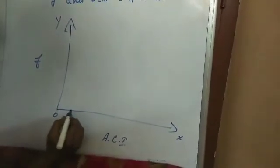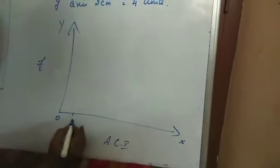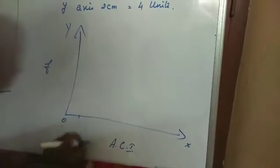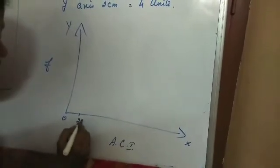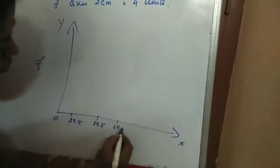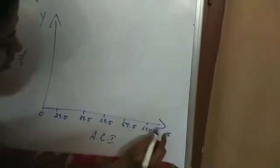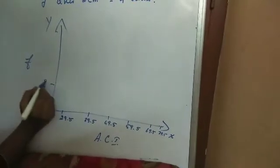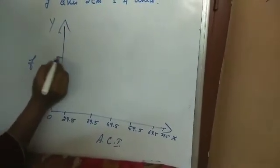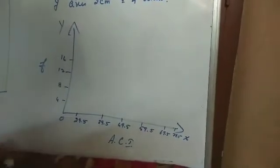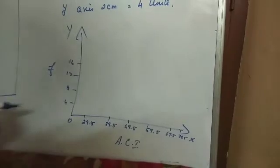Here actual class interval and here frequency. Then 0, 10, 29.5, 39.5, 49.5, 59.5, 69.5, 79.5. And here 4, 8, 12, 16 and keep going on. And you will get the histogram.